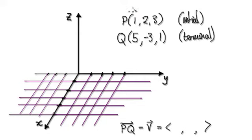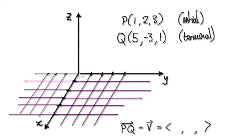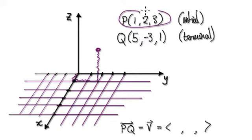To do this, this location here would be 1 in the x direction, 2 across in the y direction, and then 3 straight up. So this is our initial point.